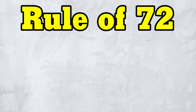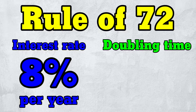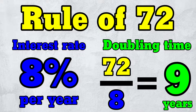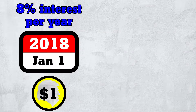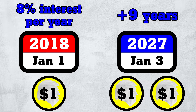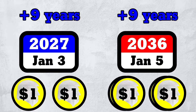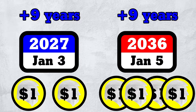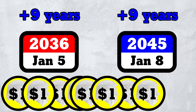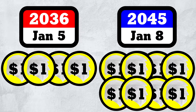The rule of 72 says that if the interest rate is 8% per year, the doubling time is roughly 72 divided by 8, or 9 years. So after 9 years our initial dollar doubles to $2. After another 9 years the $2 doubles to $4, and after yet another 9 years the $4 doubles to $8, and so on.